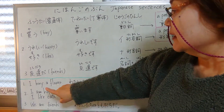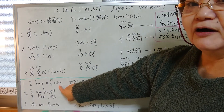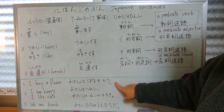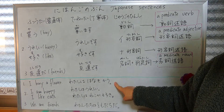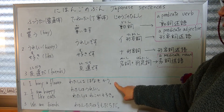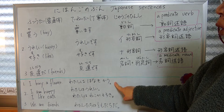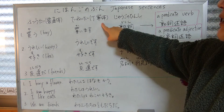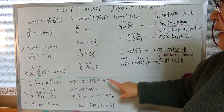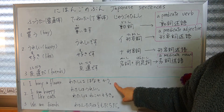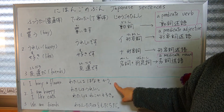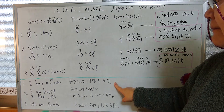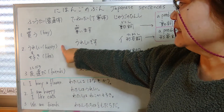For example: 'I buy a flower.' In Japanese: watashi wa hana wo kau — that's the normal form. In polite form: watashi wa hana wo kaimasu.